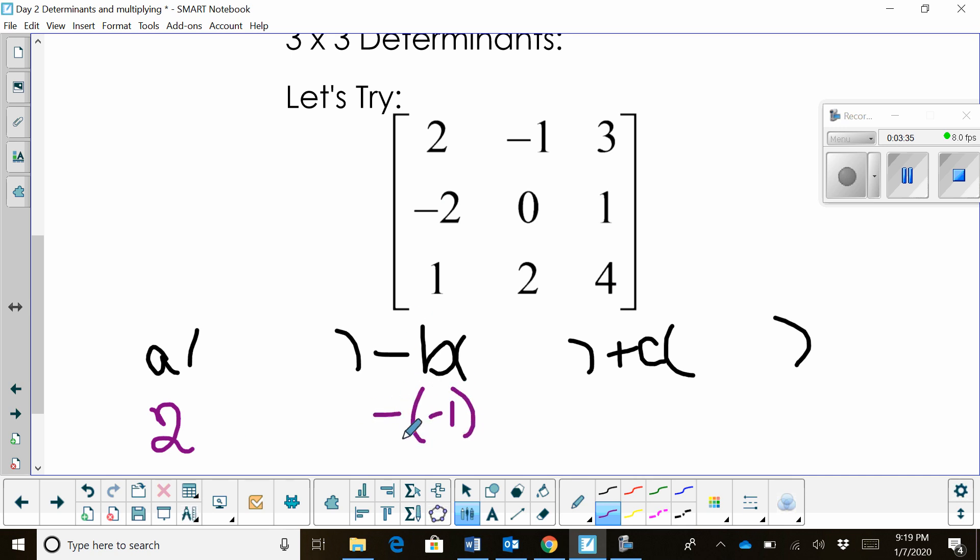B is negative 1. So I've got minus a negative 1. So I've got a double negative. I'm going to end up adding there plus C, which is positive 3.